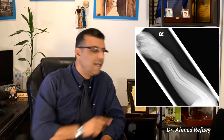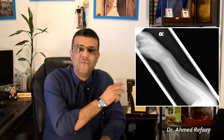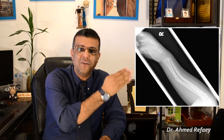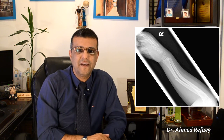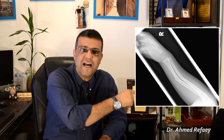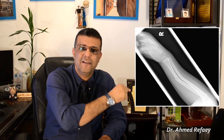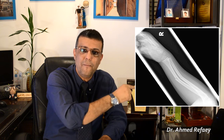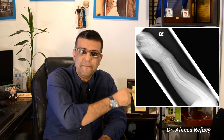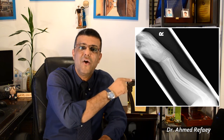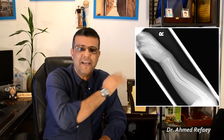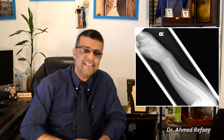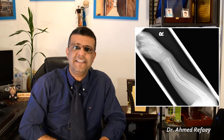Case number five. This is an incomplete fracture because it involves only part of the cortex, not reaching to the other side, involving the shaft of the right ulna and radius. It is an incomplete, oblique, simple fracture associated with posterior angulation. This is what is known as a greenstick fracture.